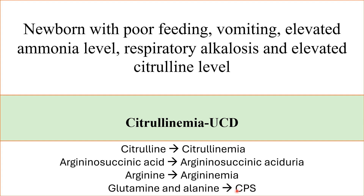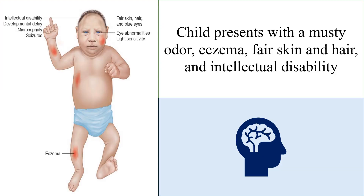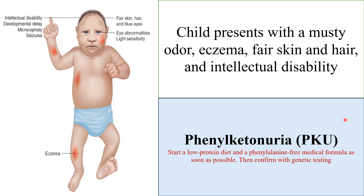CPS is carbamoyl phosphate synthetase deficiency. A child presents with a musty odor, eczema, fair skin, fair hair, and intellectual disability — developmental delay, microcephaly, seizures, fair skin, hair, and blue eyes, eye abnormalities, light sensitivity, and eczema. The most likely diagnosis is phenylketonuria. Start a low-protein diet and phenylalanine-free medical formula as soon as possible after birth, then confirm with genetic testing.